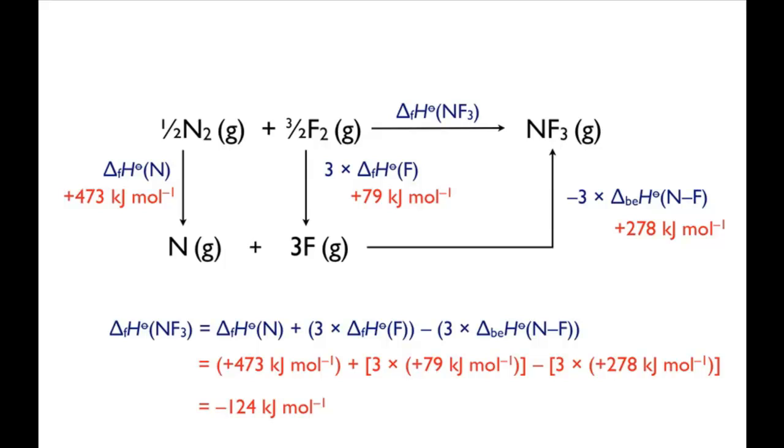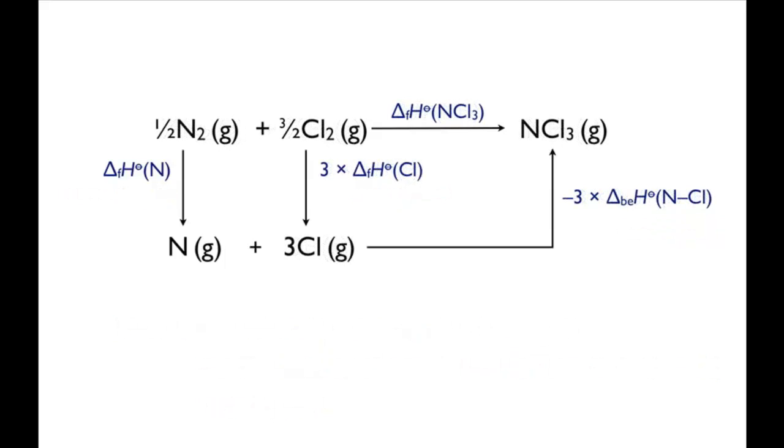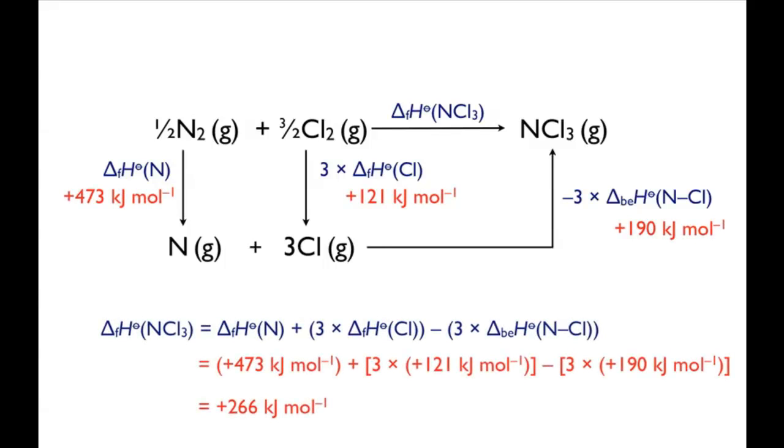For NCl3, the enthalpy cycle takes the same form, though with chlorine instead of fluorine. Putting the numbers into this one gives an enthalpy of formation for nitrogen trichloride of plus 266 kilojoules per mole.